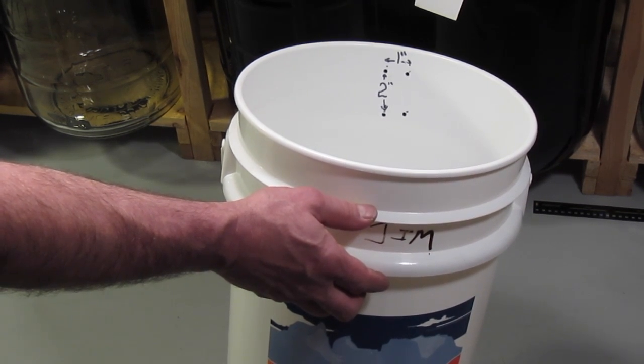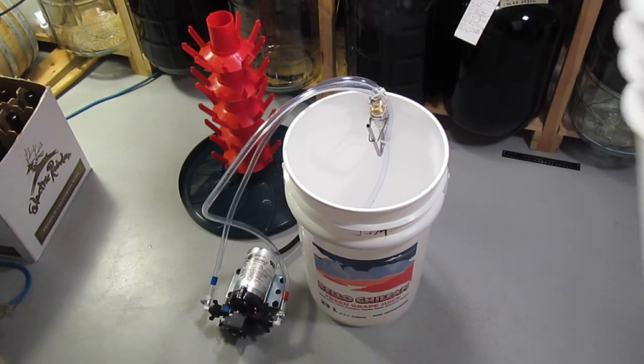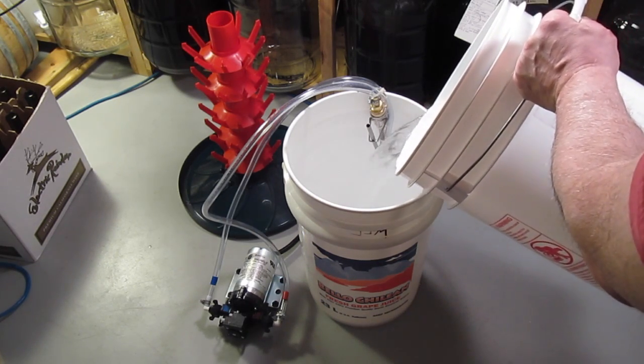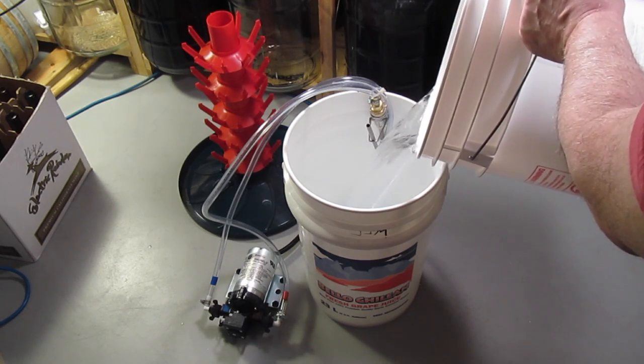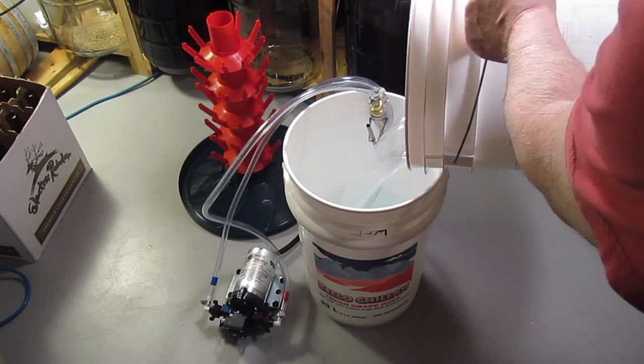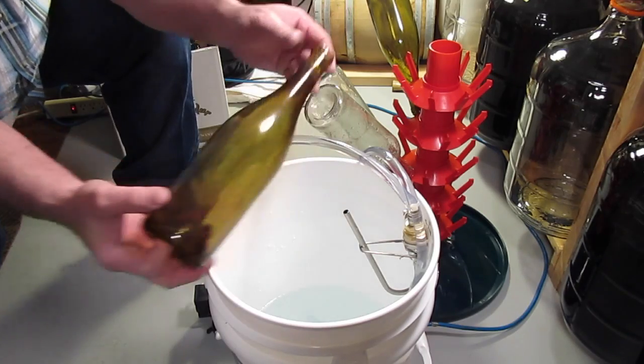Fill your bucket with approximately two gallons of sanitizing solution, then plug your pump into a known grounded polarized GFI outlet using an appropriate extension cord. Now you are ready to start sanitizing bottles.